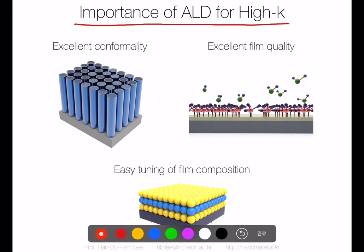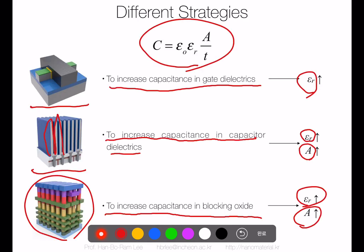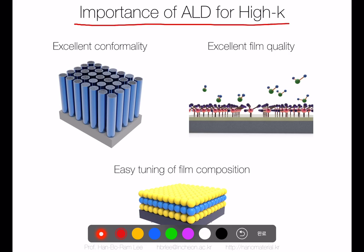The importance of ALD for high-k materials: for DRAM technology, we must coat very complicated three-dimensional structures, requiring a very conformal film — so ALD must be used. ALD also provides excellent film quality, high density, low leakage current, and easy tuning of film composition. As with zinc oxide, we can easily add elements into the ALD film just by changing the process sequence.